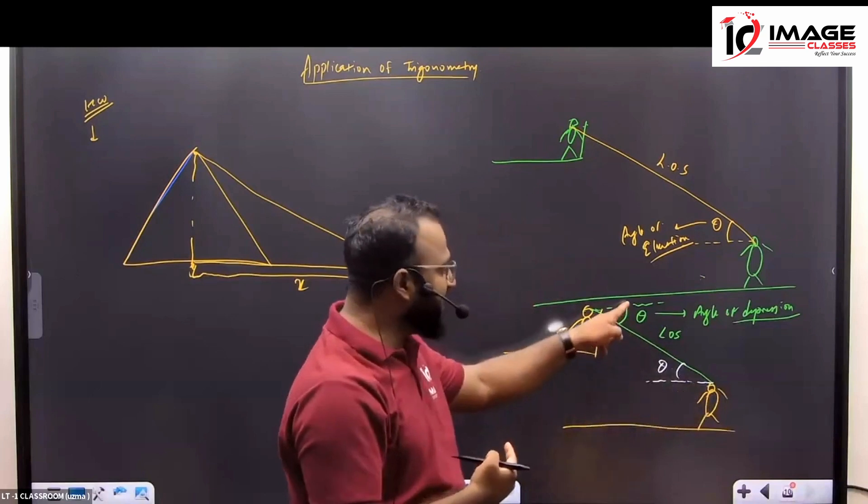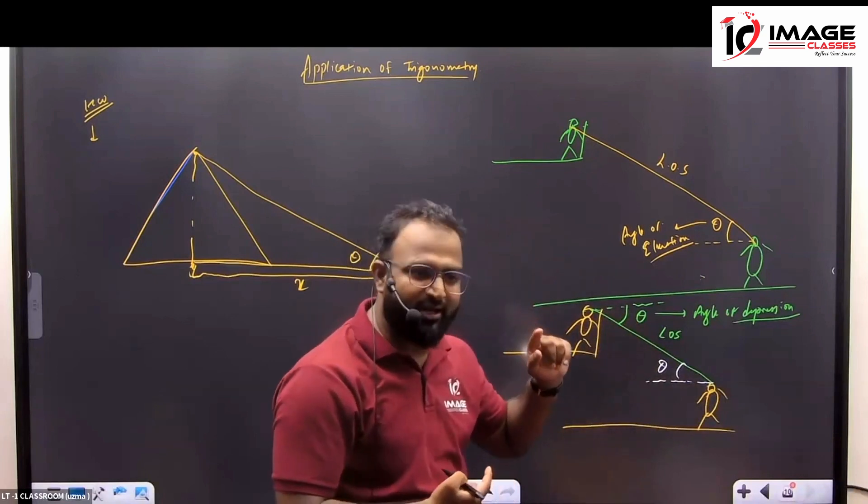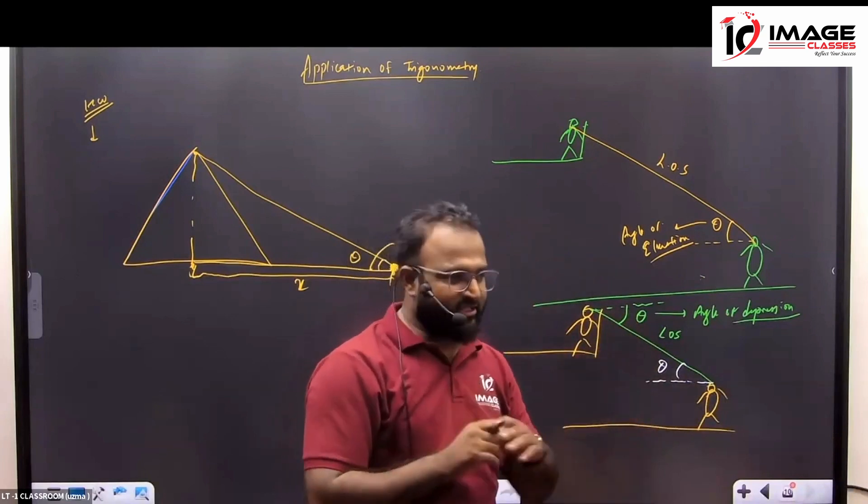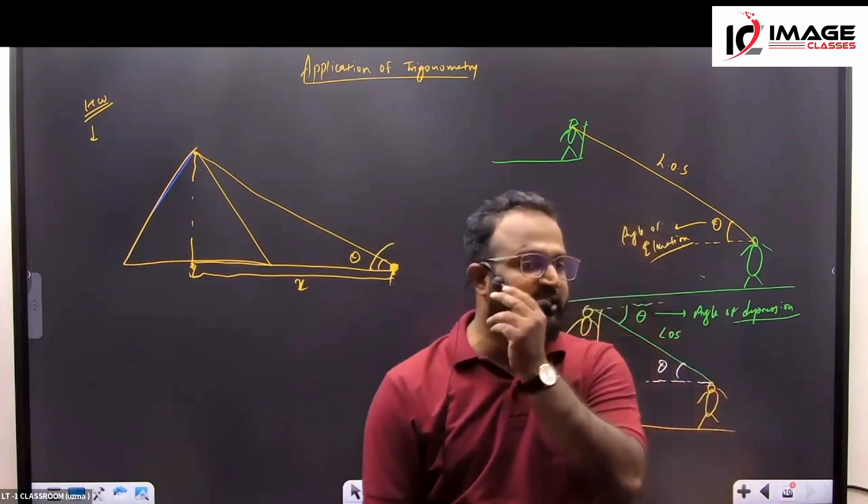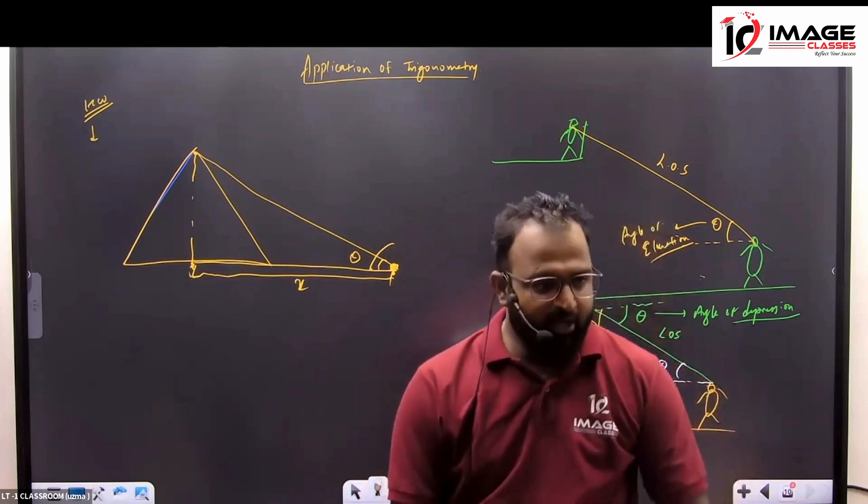Elevation. These two lines are parallel, so what will be the angle? Alternate angle. One, we can remember the fact. The other thing we can remember is elevation and depression. Elevator will be made.